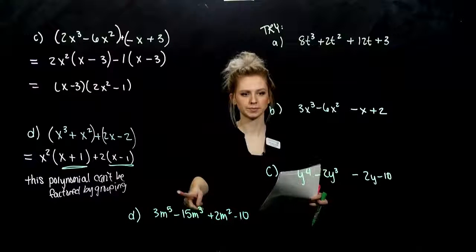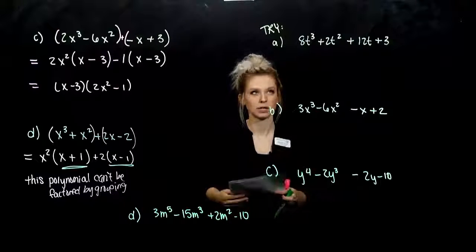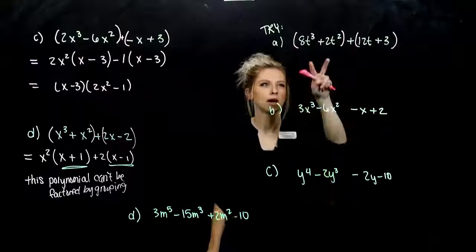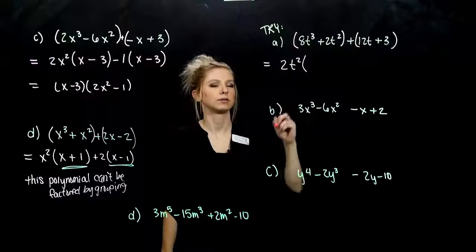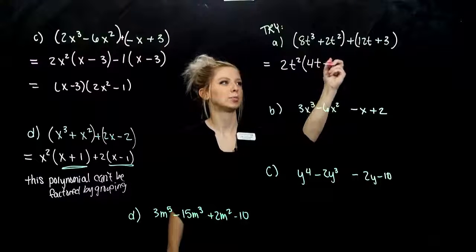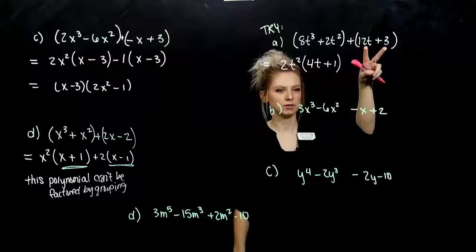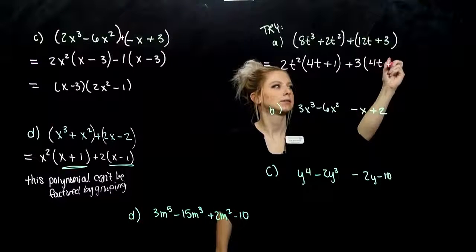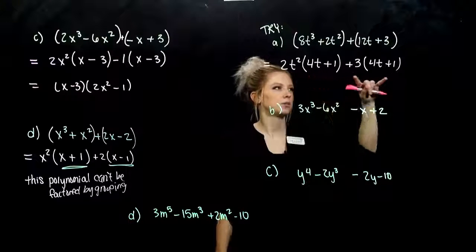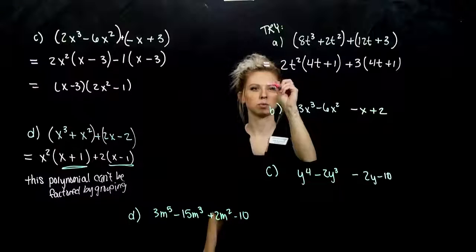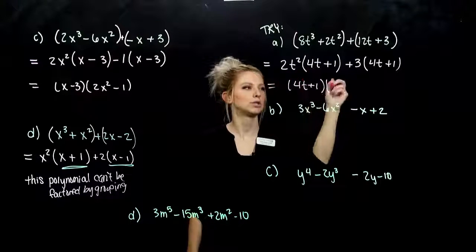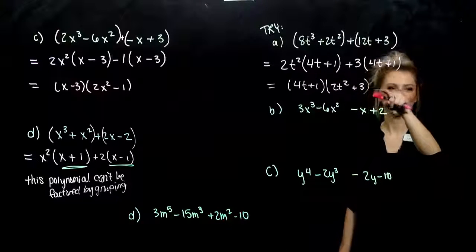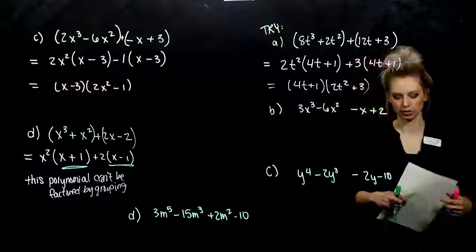Go ahead and try the next four examples — factor by grouping, and if you can't, tell me. In the first, we've got t's involved, but that's fine. Group the first two and the last two. Common between the first two: 2t squared. We're left with 4t plus 1. Common between the second two: positive 3, leaving 4t plus 1. They match! Common between these two: 4t plus 1. Take it out and we're left with 2t squared plus 3. We could foil it out to check.